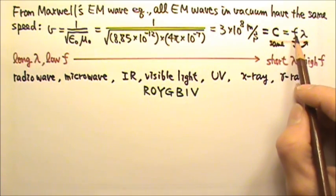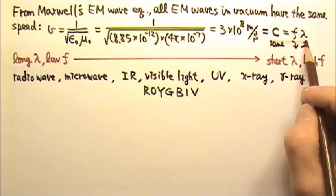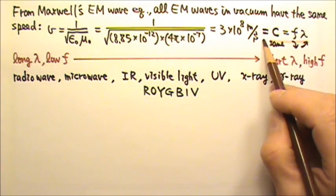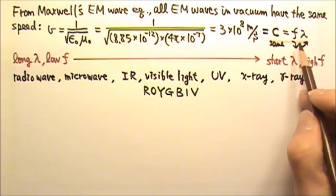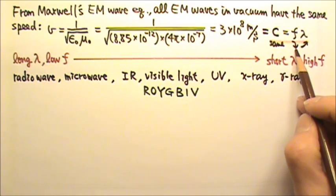Because wave speed equals frequency times the wavelength, and all EM waves have the same speed in vacuum, the longer the wavelength, the lower the frequency.